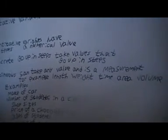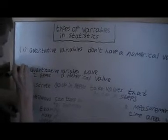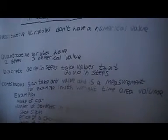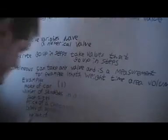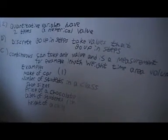Those are the different types of variables we get. We've got some examples here. The first example is the make of a car. Because the make of a car isn't actually a number, it isn't a numerical value. So therefore the make of a car is qualitative.